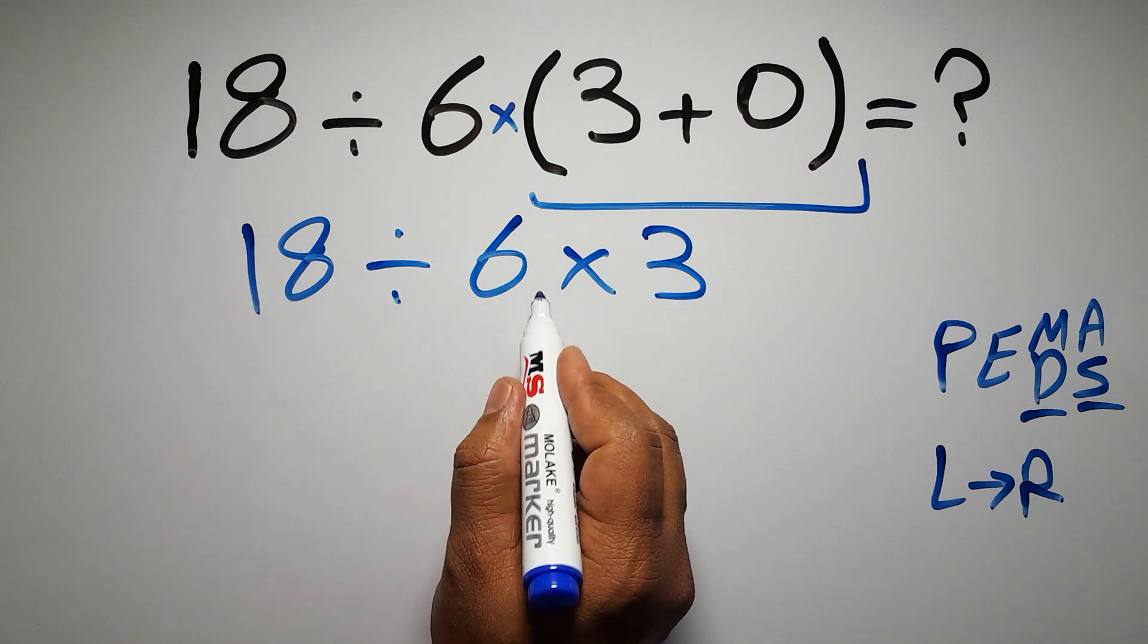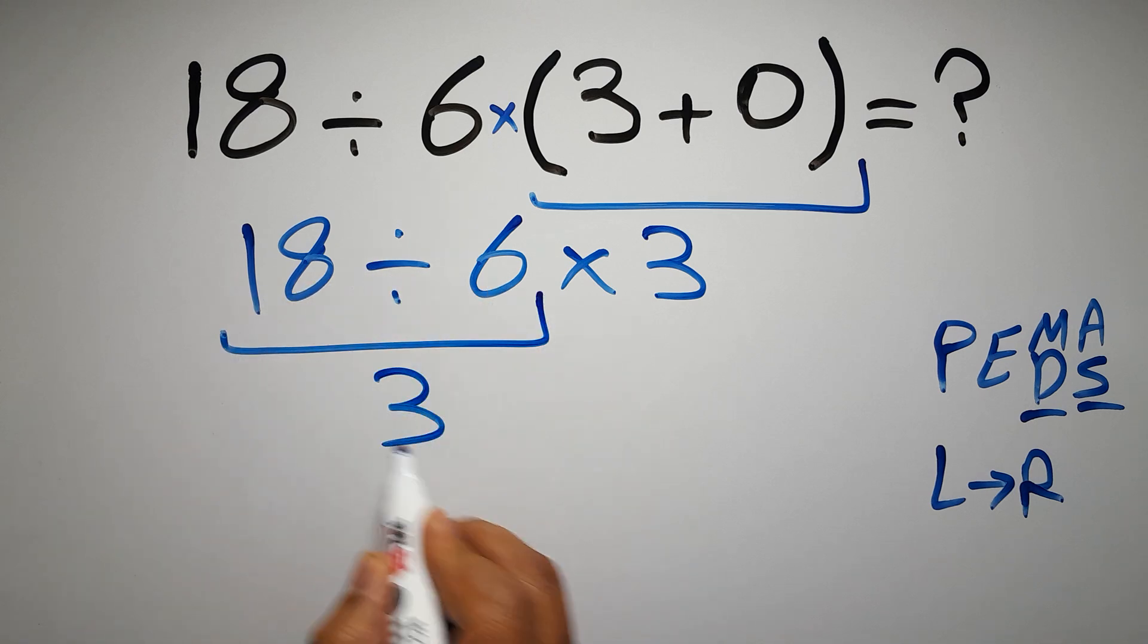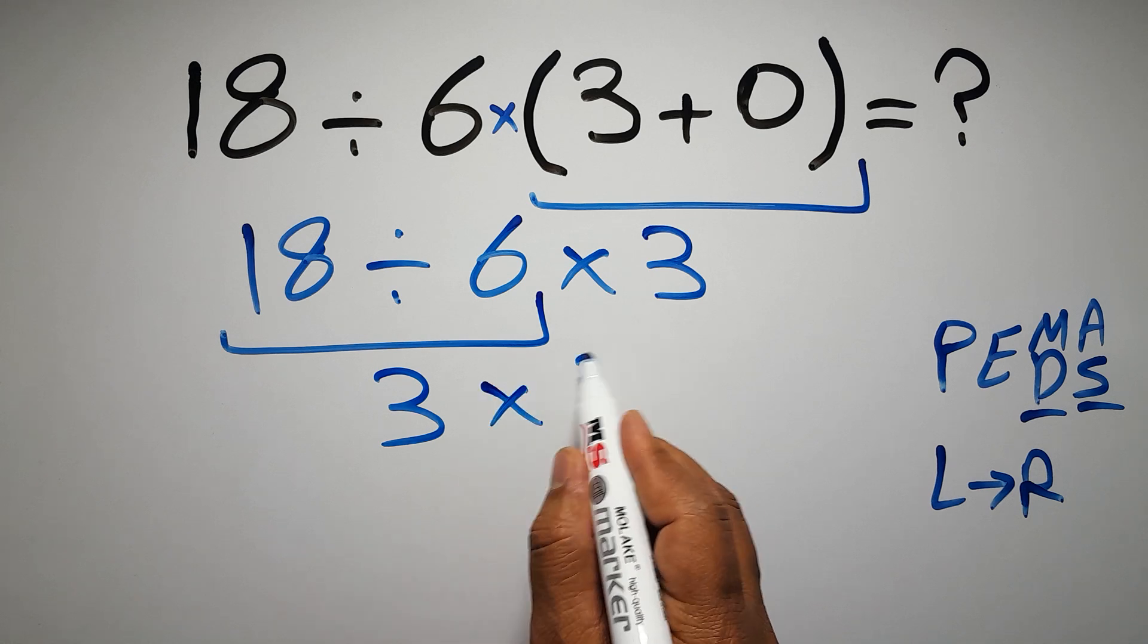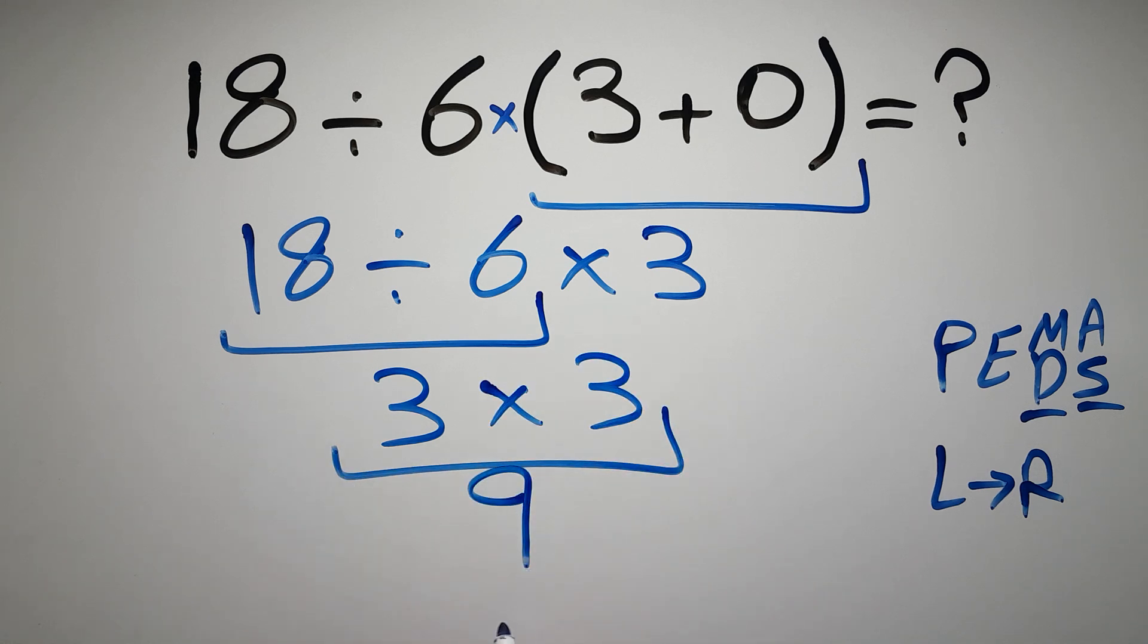18 divided by 6 is just 3. So, 3 times 3, which gives us 9. And this is our final answer to this problem.